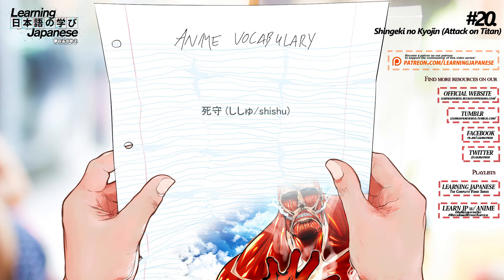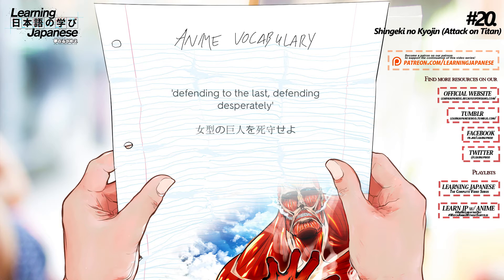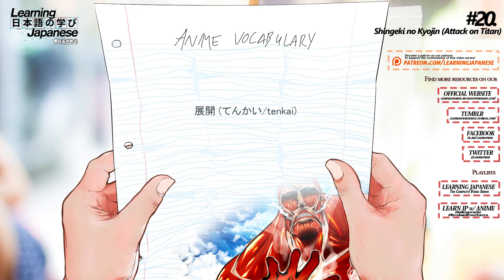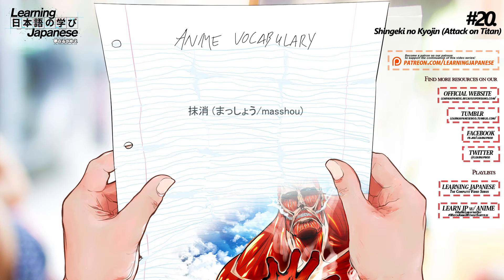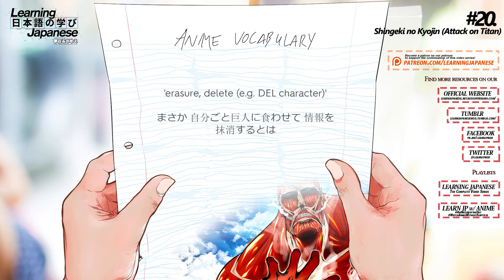死守 (shishu) — Defending to the last, defending desperately. 展開 (tengkai) — Development, evolution, progressing, unfolding, expansion, spreading out, extending, deployment, building up. 抹消 (masho) — Erasure, delete.